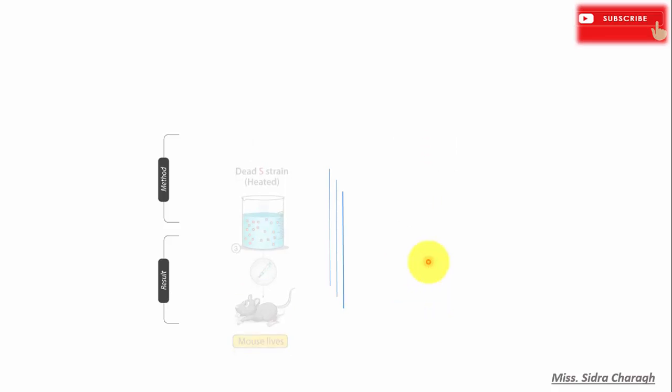In the next experiment, cells of smooth strain were killed by heat, and when these cells were injected into mice, the mice survived.